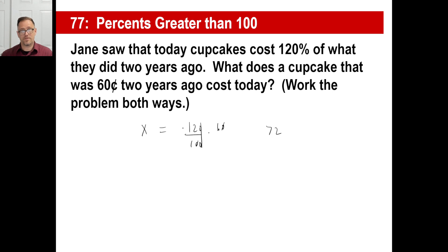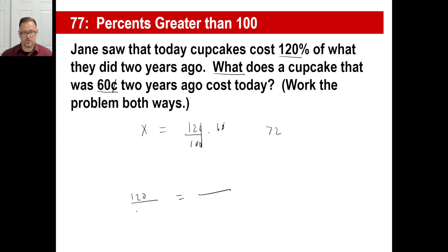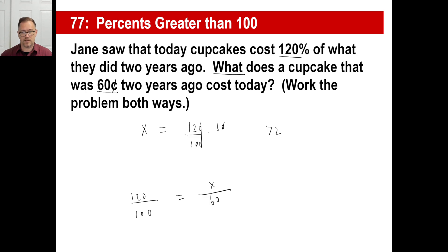For the other method, fraction equals fraction: 120 over 100 = x over 60. You're looking for a number bigger than 60 cents, so the bigger number x goes on top. Cross multiply — you get the same answer of 72.